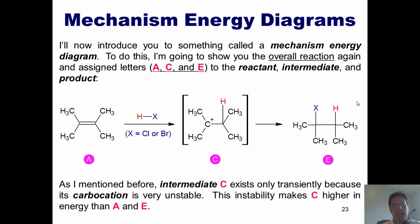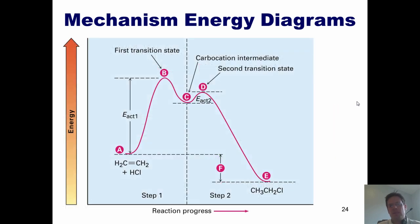Now, as I mentioned before, intermediate C only exists transiently because its carbocation is very unstable. This instability makes intermediate C higher in energy than A and E. So this type of diagram is called an energy diagram. You'll note that product E, in order for this reaction to move forward efficiently, has to be lower in energy, which is, in other words, a way of saying more stable than reactants A.